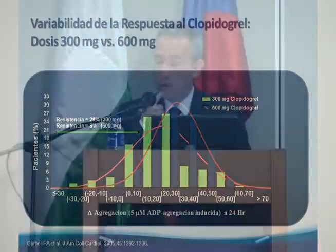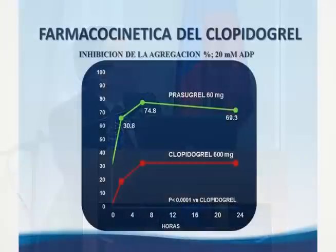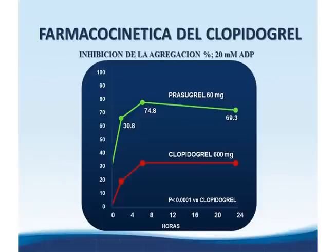Al comparar clopidogrel versus prasugrel por agregometría, el clopidogrel logra en el mejor caso un 35-40% de inhibición, mientras que el prasugrel alcanza niveles de inhibición mucho más altos y de forma más temprana, demostrando ser un inhibidor del P2Y12 mucho más potente.